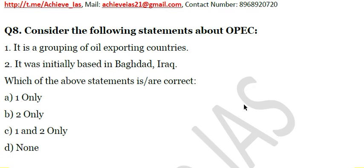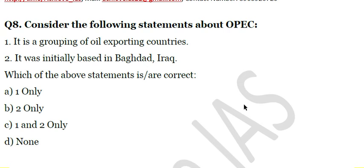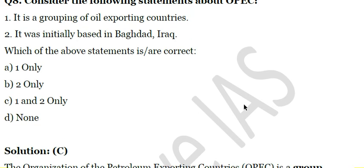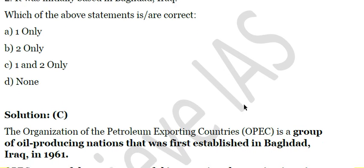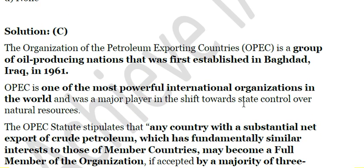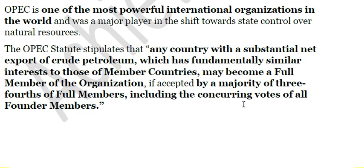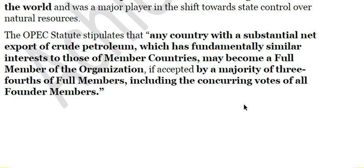Next question: Consider the following statements about the Organization of Petroleum Exporting Countries (OPEC). First — it is a grouping of oil-exporting countries. Second — it was initially based in Baghdad, Iraq. Both statements are correct. OPEC is one of the most powerful organizations of oil-exporting countries, and it was initially based in Baghdad, Iraq in 1961. Membership can be given to any country with a substantial net export of crude petroleum, accepted by a majority of three-fourths of all members including concurring votes of all founder members.